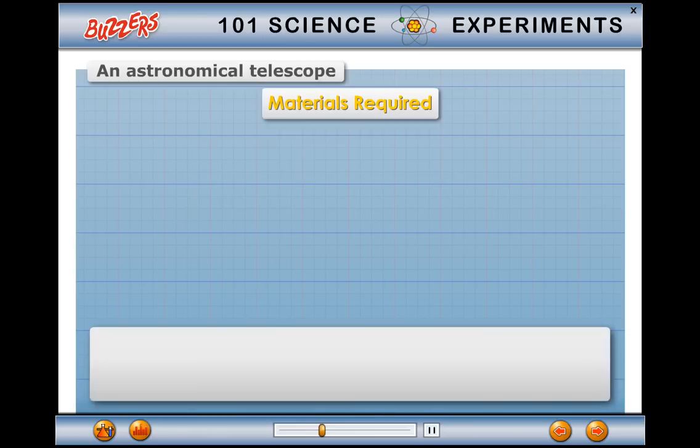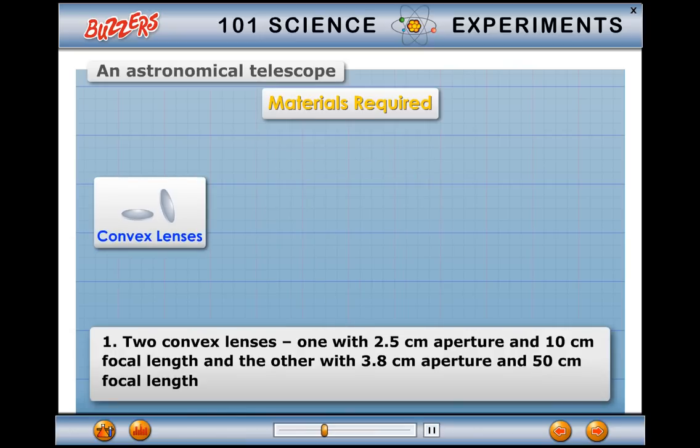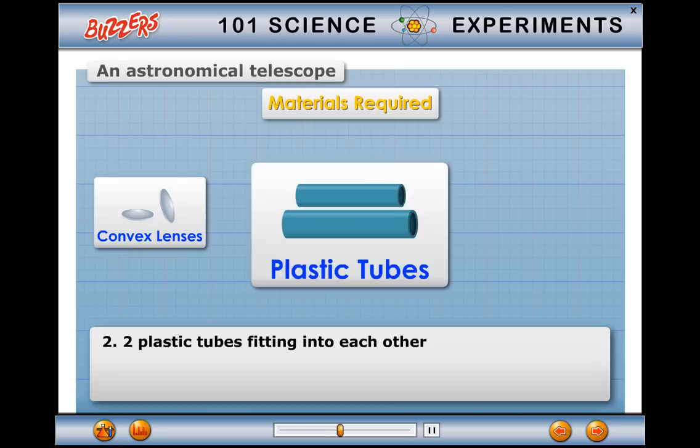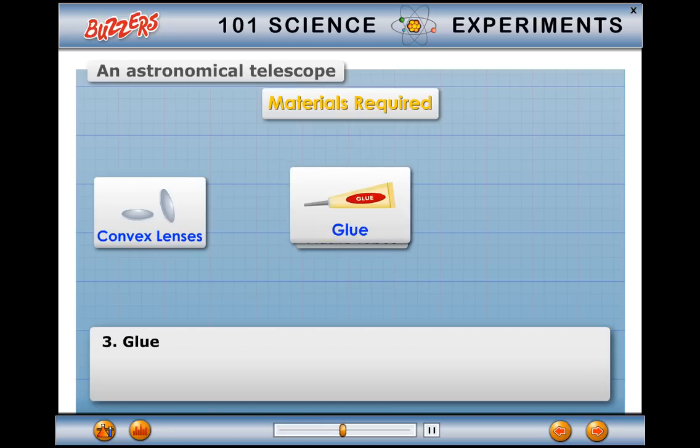Requirements: Two convex lenses, one with 2.5 cm aperture and 10 cm focal length and the other with 3.8 cm aperture and 50 cm focal length. Two plastic tubes fitting into each other. Glue.